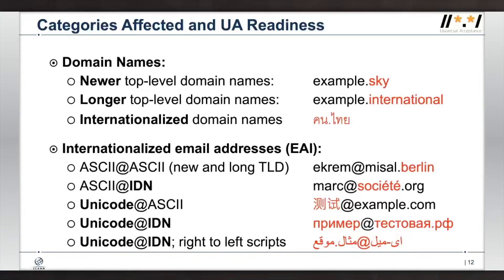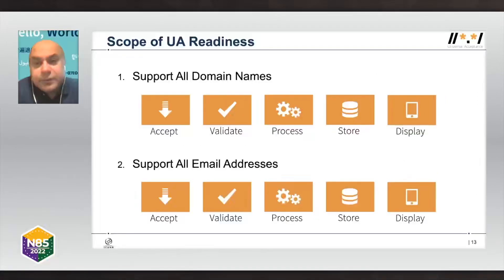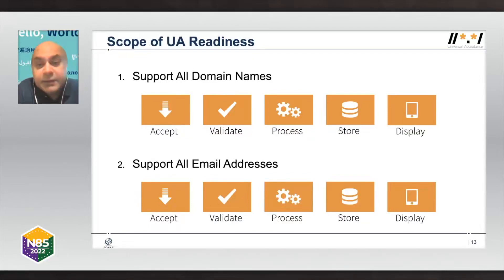Universal acceptance means that all domain names can be accepted, validated, processed, stored, and displayed — and similarly for email addresses — across all the different applications being developed, hosted, or configured.